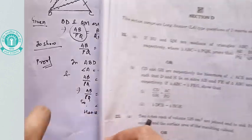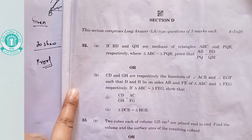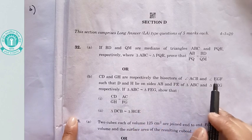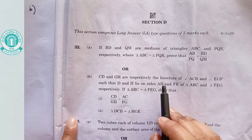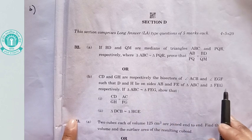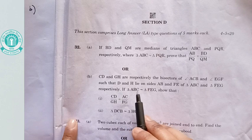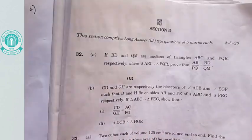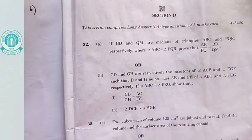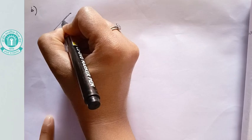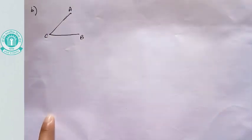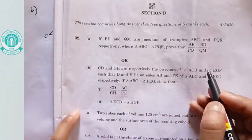I hope you understood Part A of question number 32. Now let's come to Part B. In Part B, CD and GH are respectively the bisectors of angle ACB and angle EGF, such that D and H lie on sides AB and FE of triangle ABC and triangle FEG respectively.